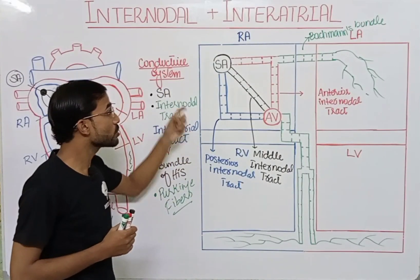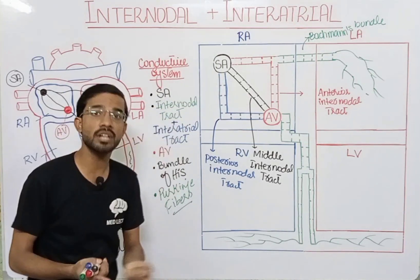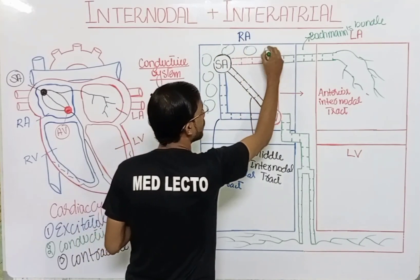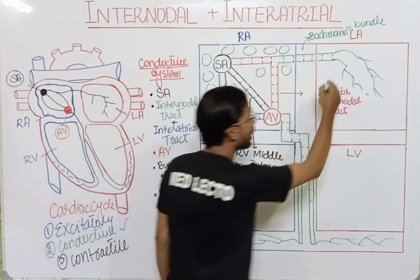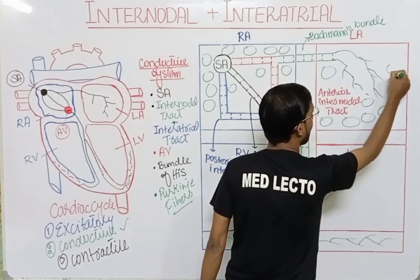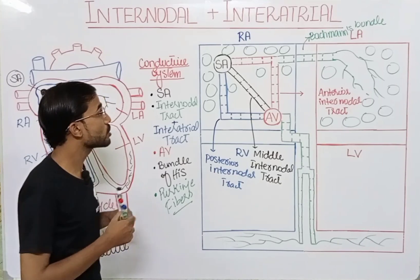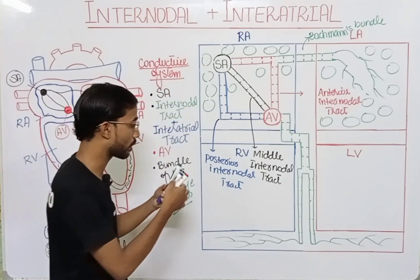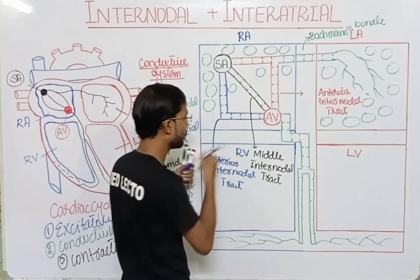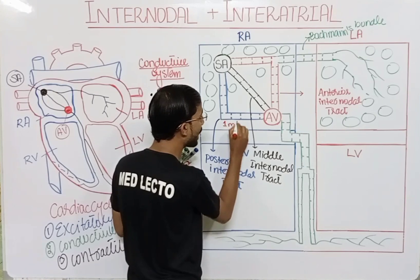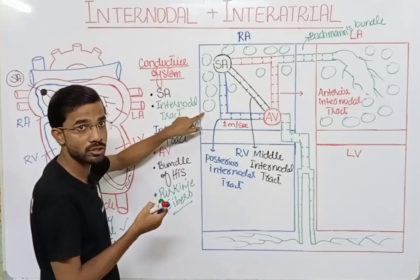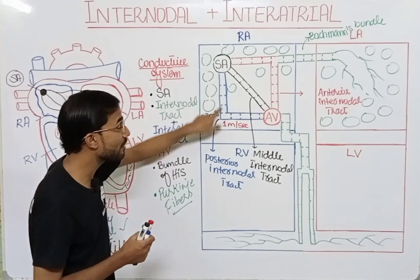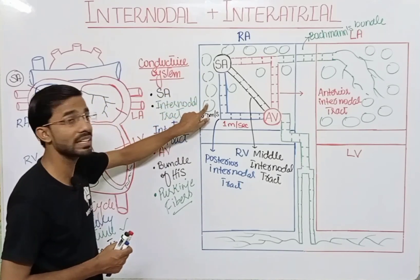These tracks consist of specialized cells or fibers, and the atria also consist of their own cells or fibers. Signal travel in these tracks will be faster compared to signal travel in the cells of the atria. Signal travel in the tracks is 1 meter per second, but signal travel in the cells of the atria is 0.3 meter per second. That is the basic difference.